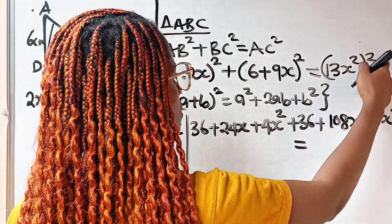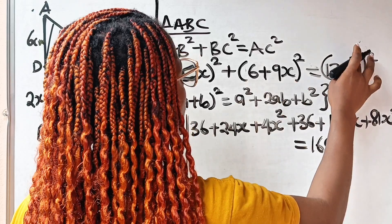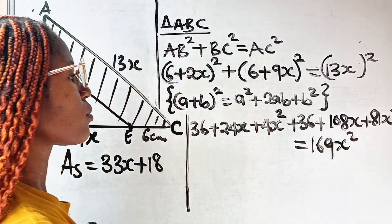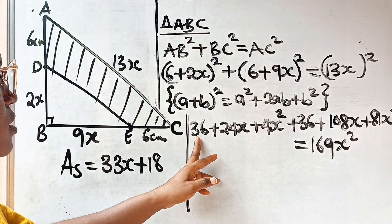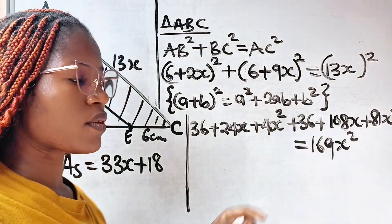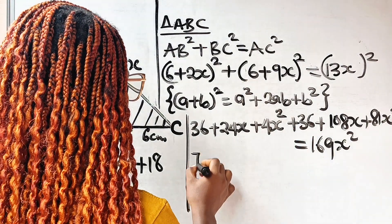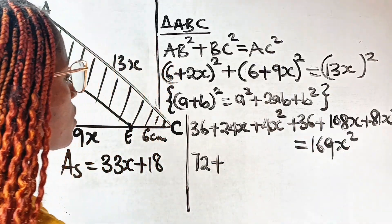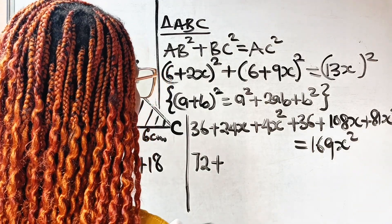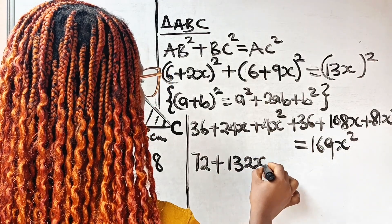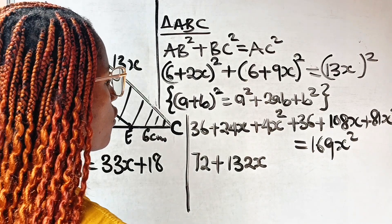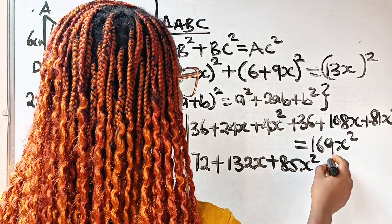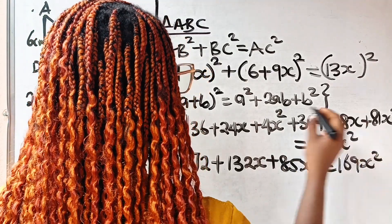And AC squared is (13x) squared which is 169x squared. Collecting like terms, we have 36 plus 36 giving 72, 24x plus 108x giving 132x, and 4x squared plus 81x squared giving 85x squared, all equal to 169x squared.